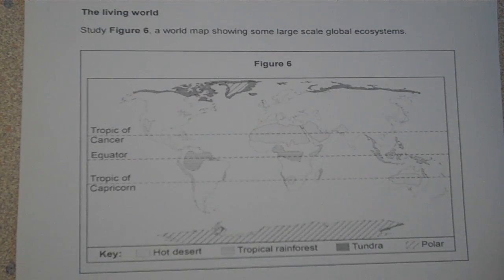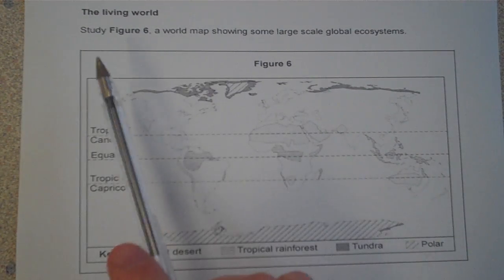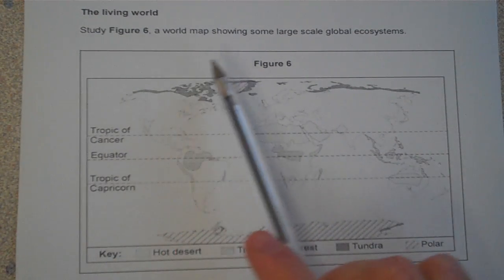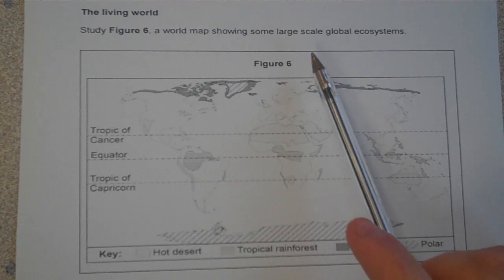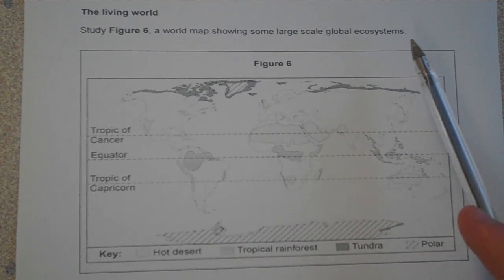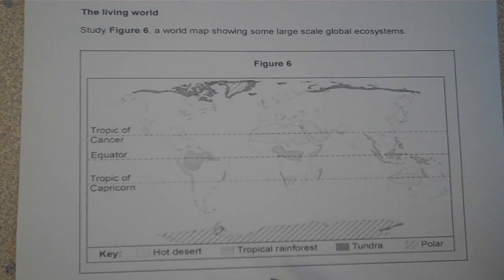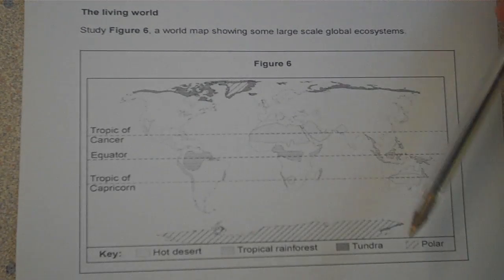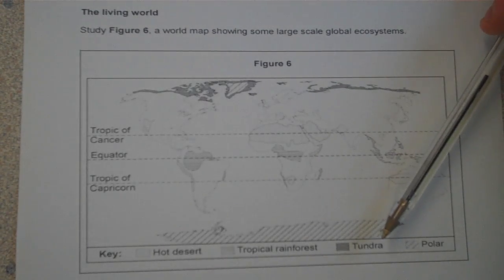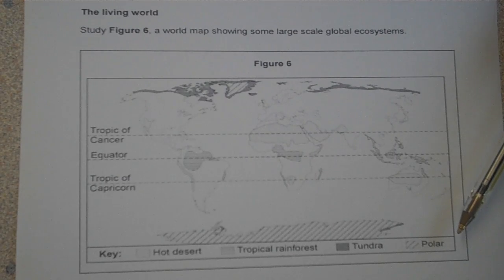This is a question from the Living World unit of the Geography and Geoscience course. Study figure 6, a world map showing some large-scale global ecosystems. On the map we have hot deserts, tropical rainforests, tundra and polar regions.